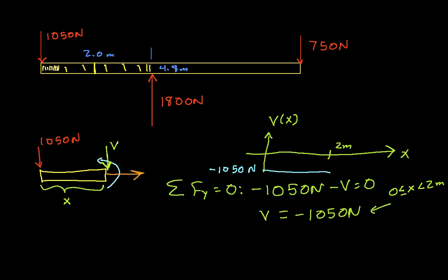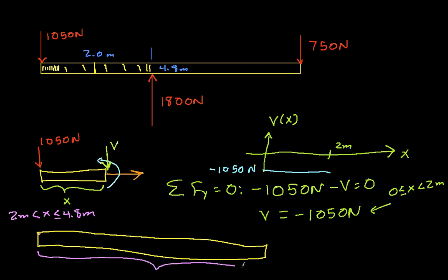So now, let's look at the case where x is greater than 2 meters, but less than the length of the beam. So this is going to be the case where x is between 2 meters and 4.8 meters.